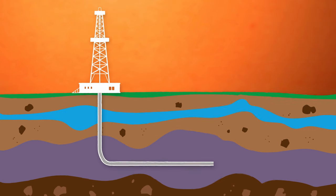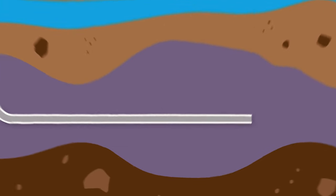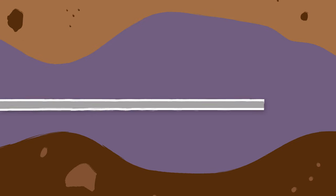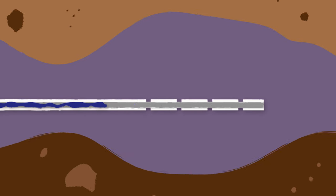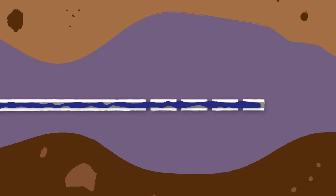Now here's where the fracturing comes in. First, you open up holes in the horizontal section of the pipe. Then you vigorously push a liquid cocktail known as fracking fluid down into the borehole under high pressure.